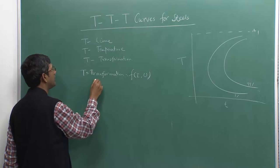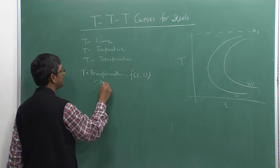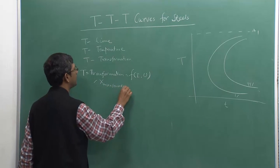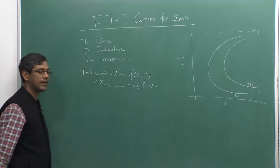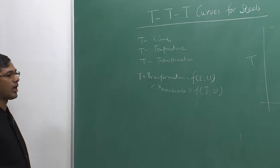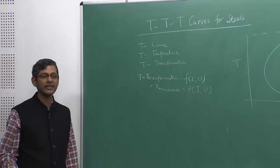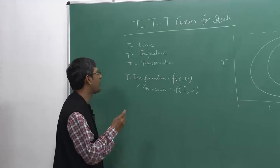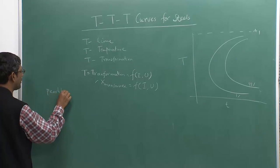Transformation is nothing but a function of I and U. Now in a real experimental technique, how do I determine this? Let us consider the case of pearlite, then I can explain it in a better way.